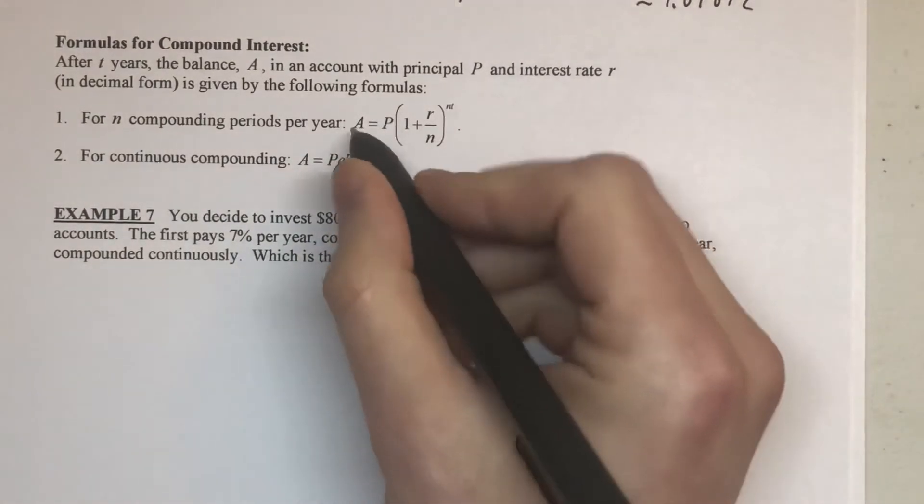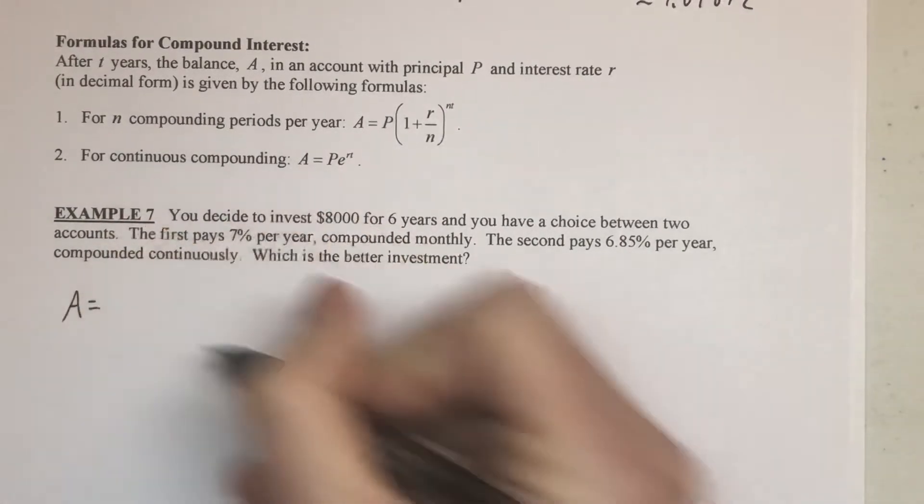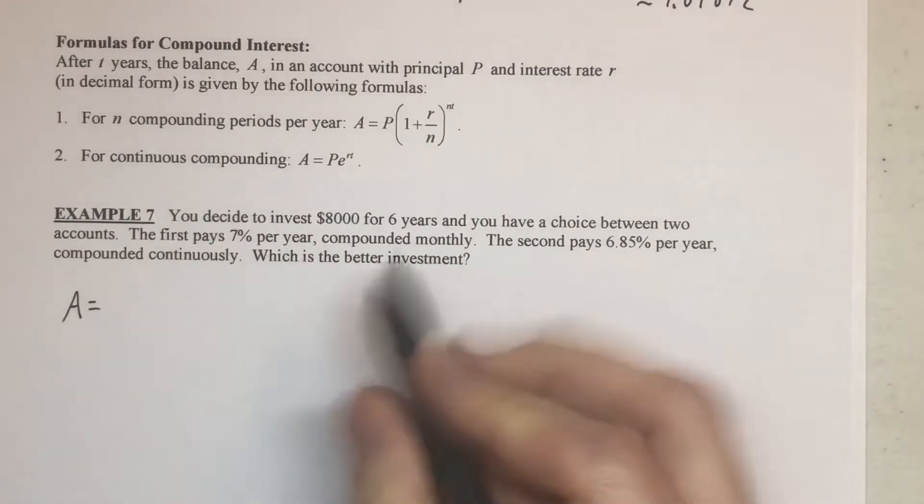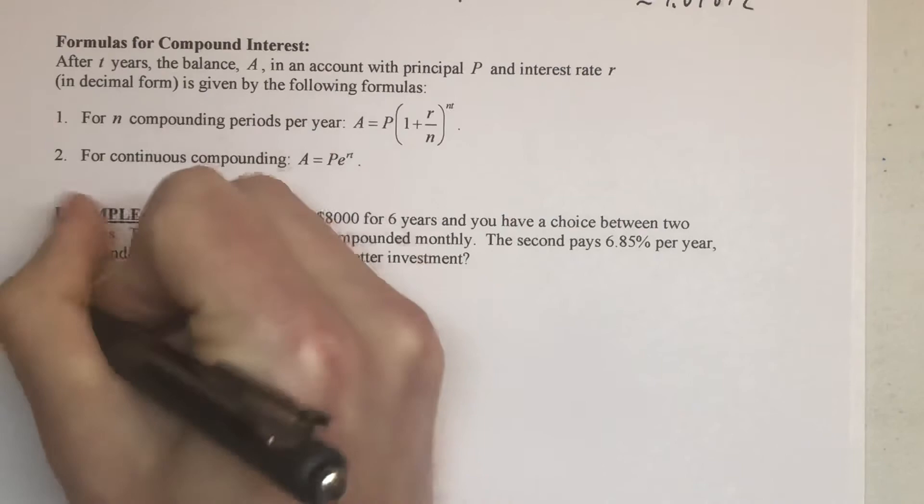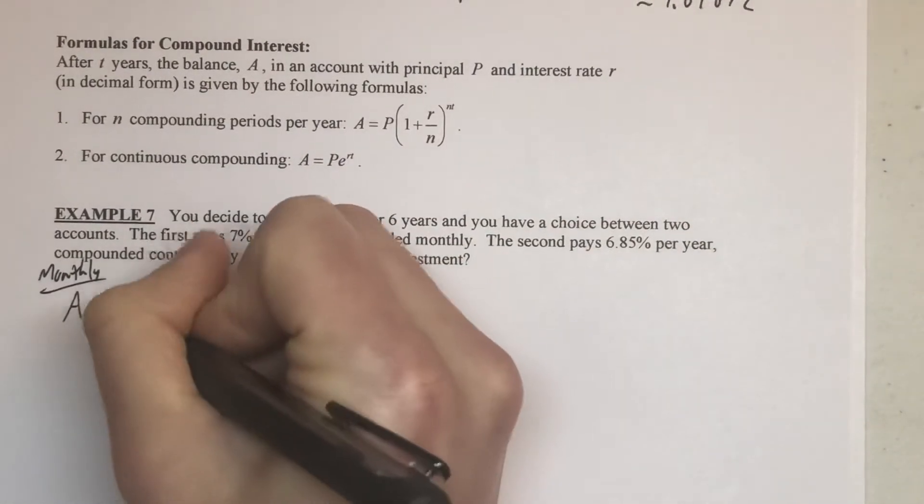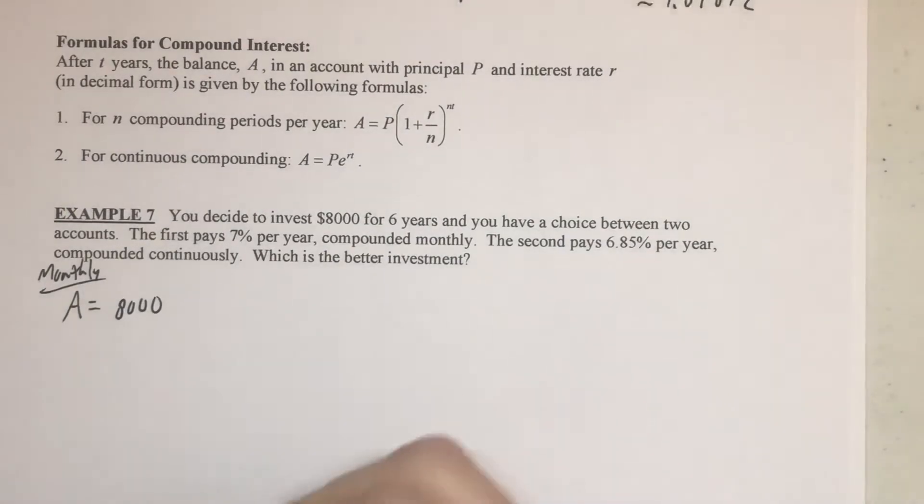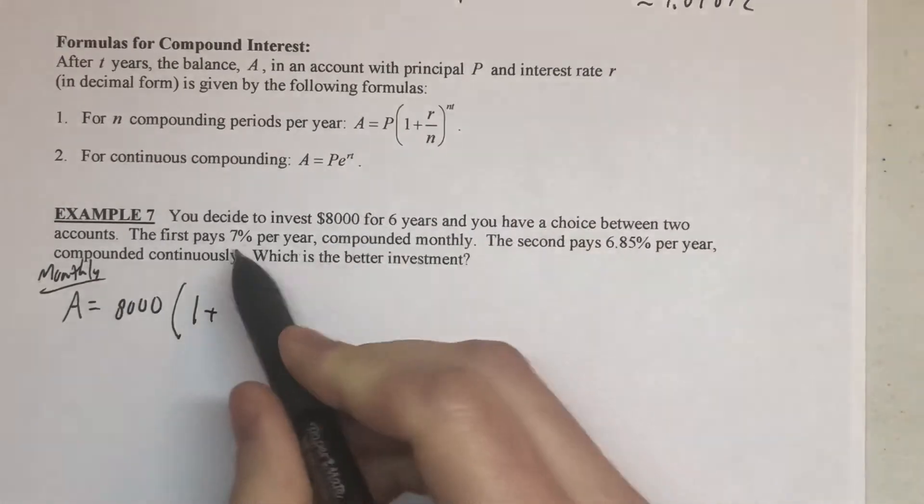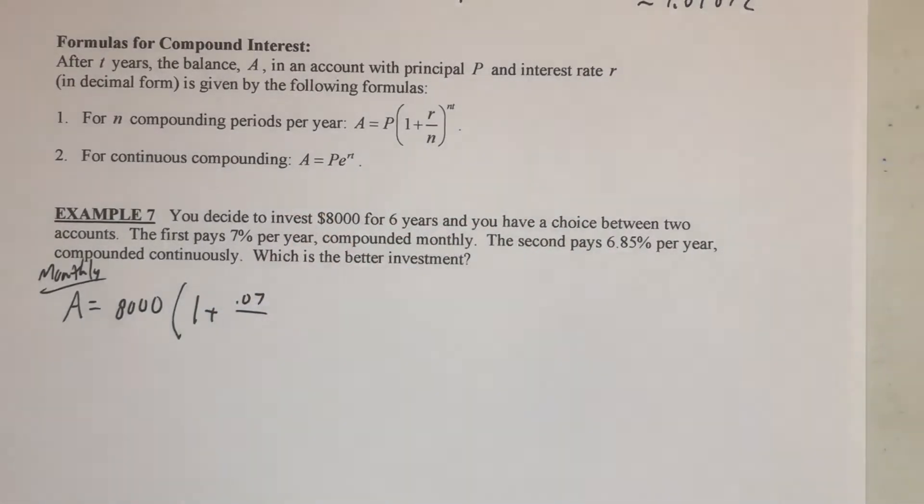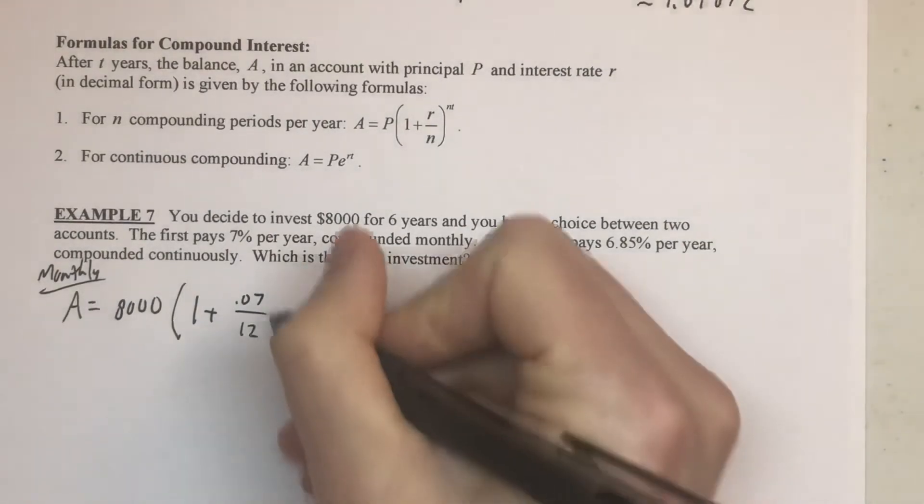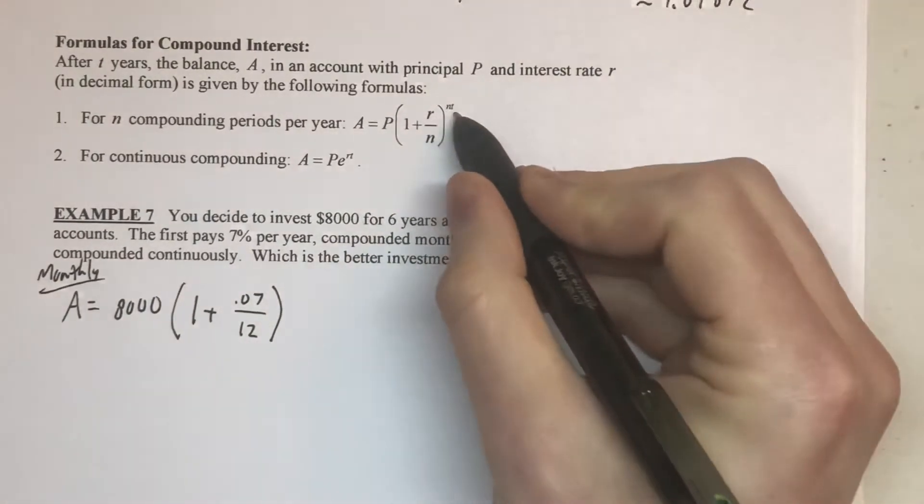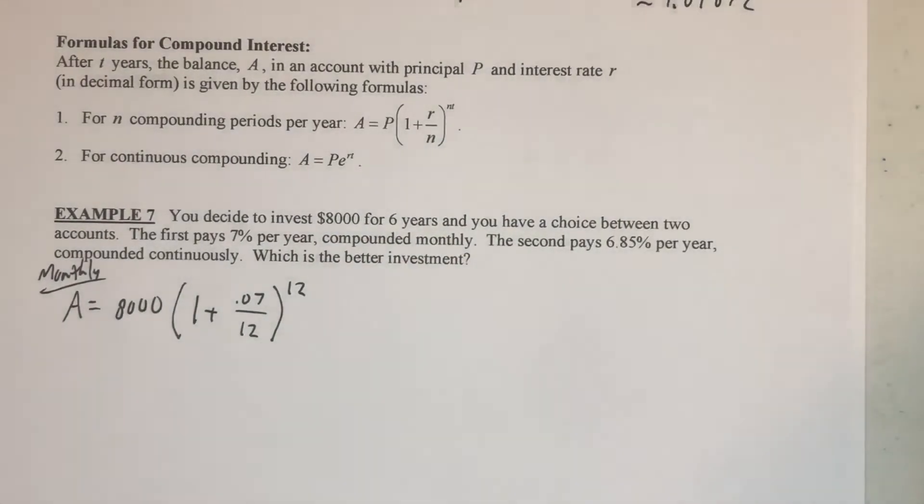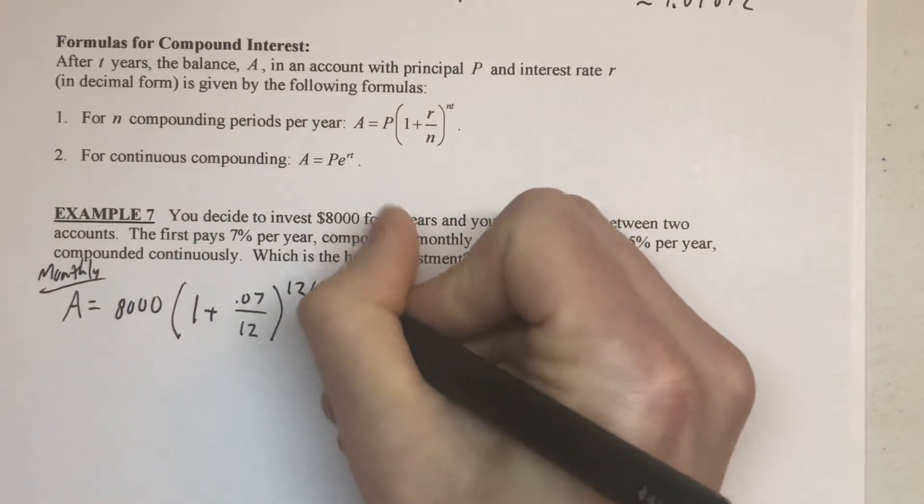And so, if we're doing the compounded n times per year, so in this case we're doing the compounded monthly. So, we'll just label this the monthly one. Then we're putting in the $8,000 times one plus. All right, so our rate is that seven percent, so as a decimal it's 0.07, divided by the 12 months that's being offered over, then n times t, and again the 12 months, t is the number of years, which would be in this case six years.